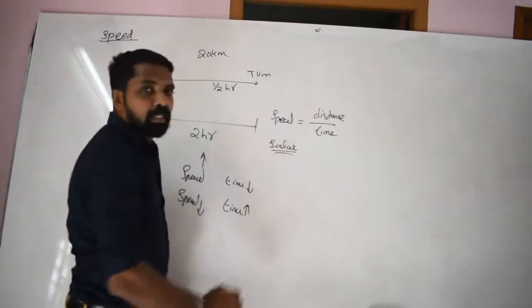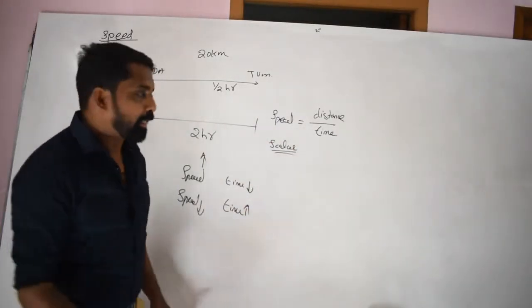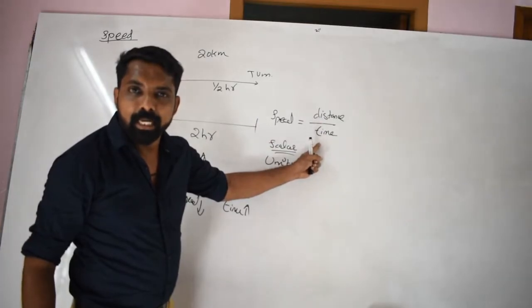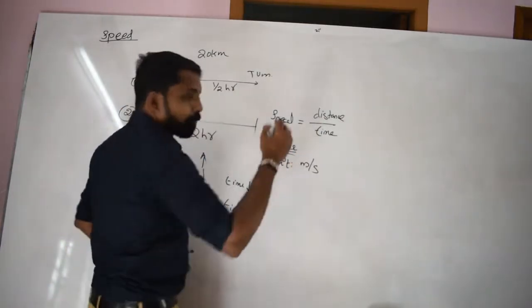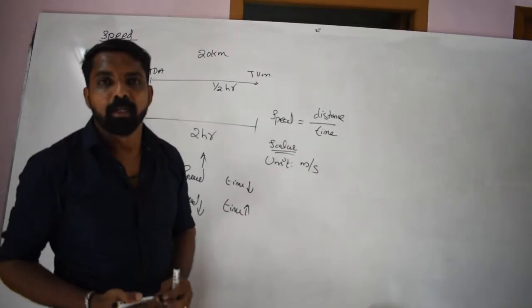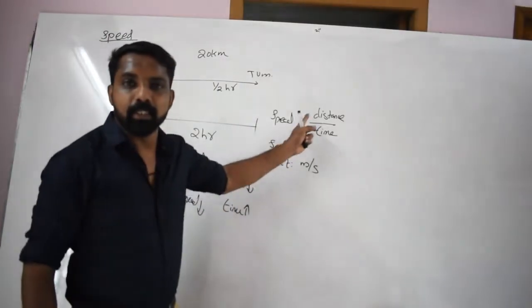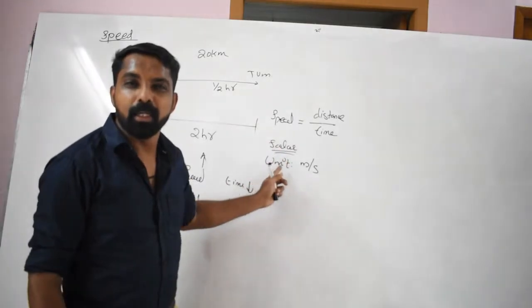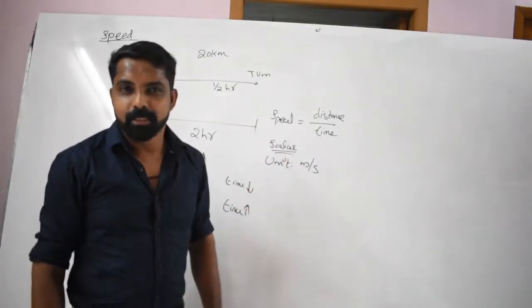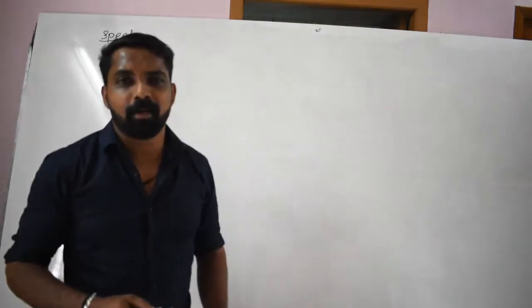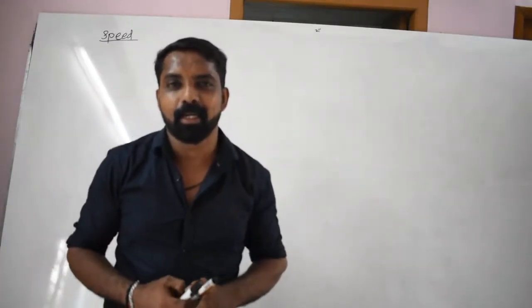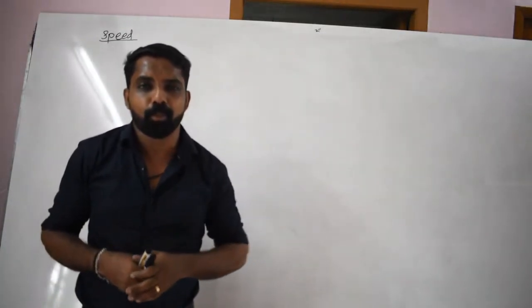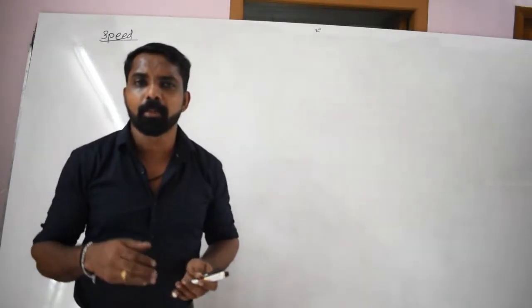Unit: distance divided by time equals speed. Speed unit is meter per second. Speed is distance divided by time, unit is meter per second.